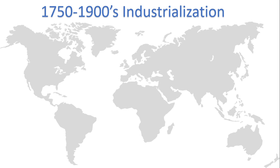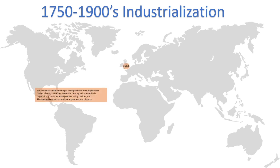Now let's talk about industrialization — another big factor that comes into play here. The Industrial Revolution began in England due to multiple water bodies and rivers to energize production, lots of raw materials, new agricultural methods, increased population growth, and urbanization — people moving to the cities. It also created factories to produce great amounts of goods, and that factory system had many innovations that allowed it to produce mass goods.